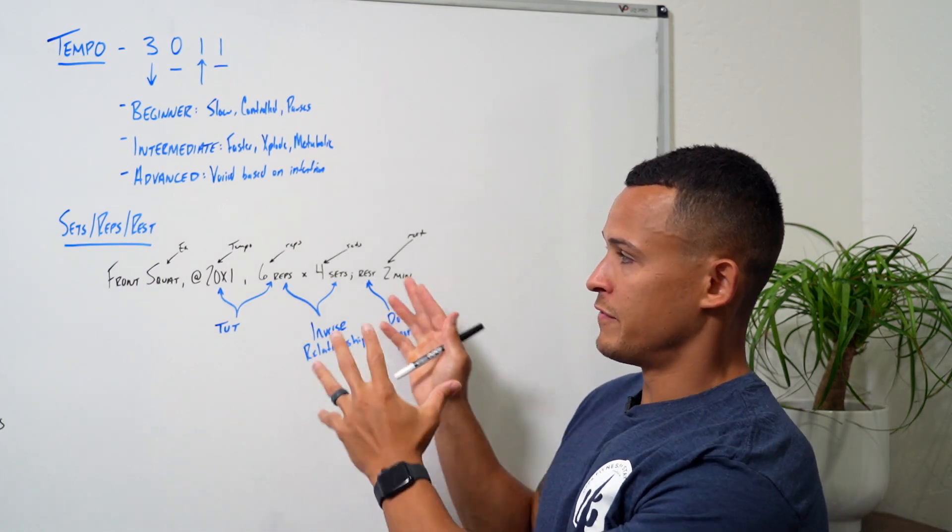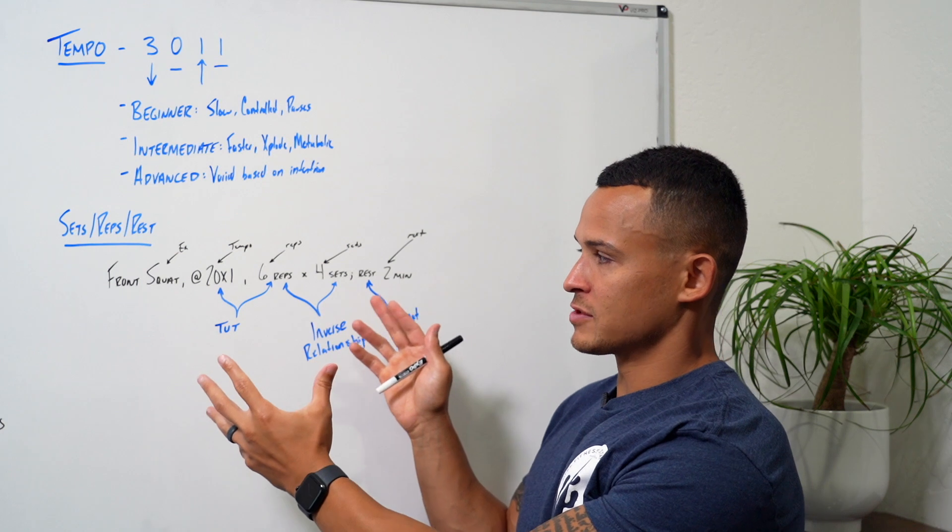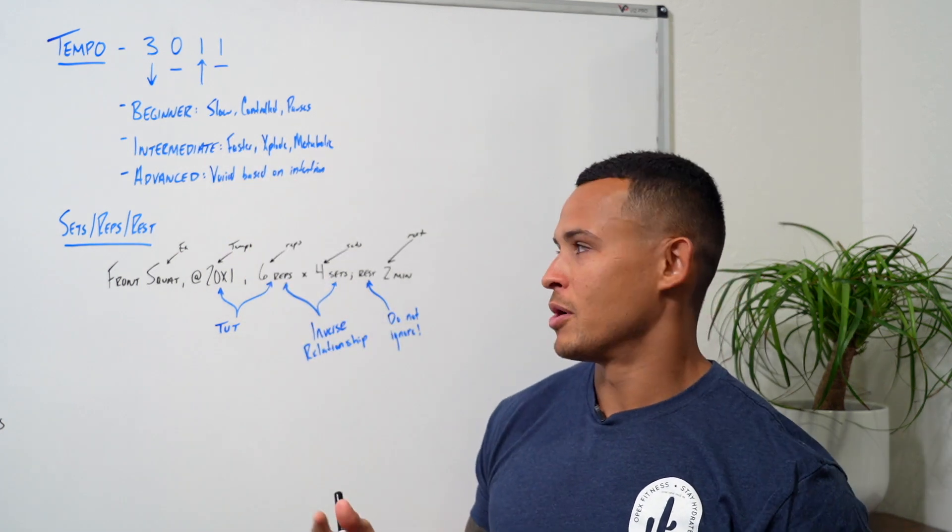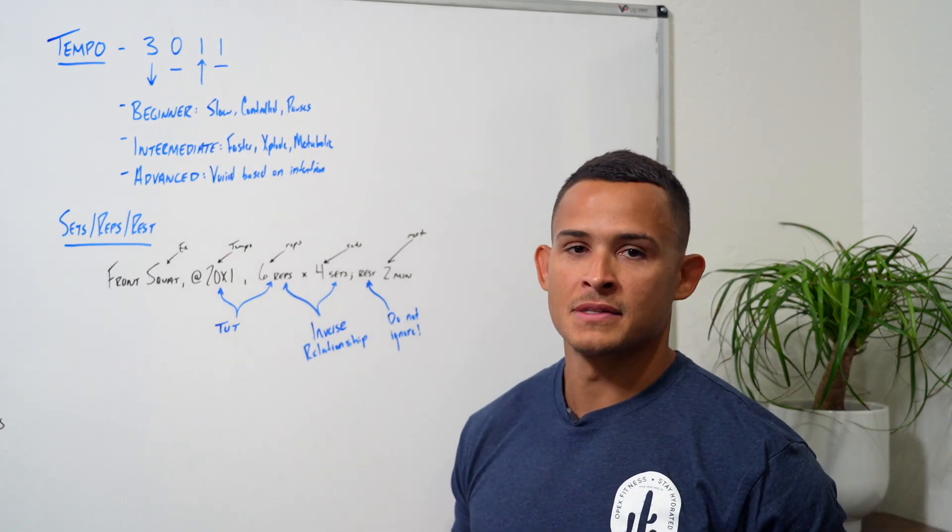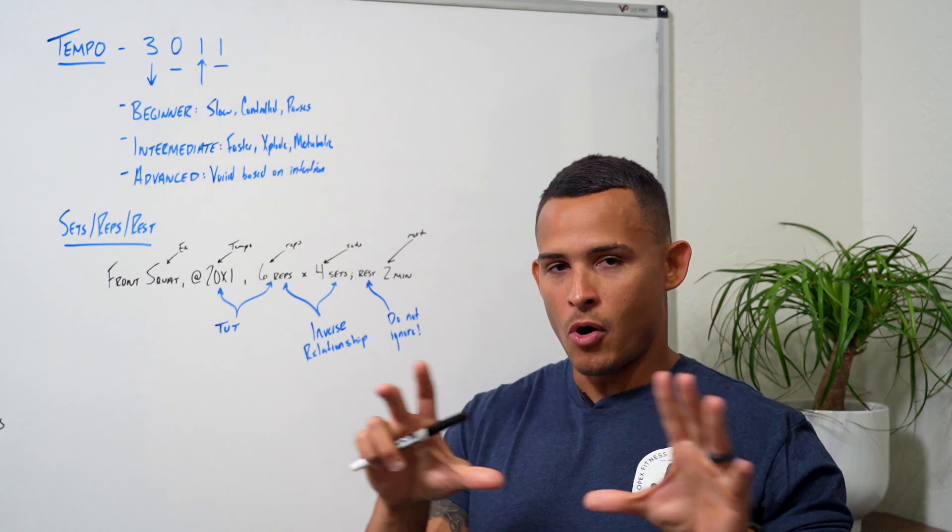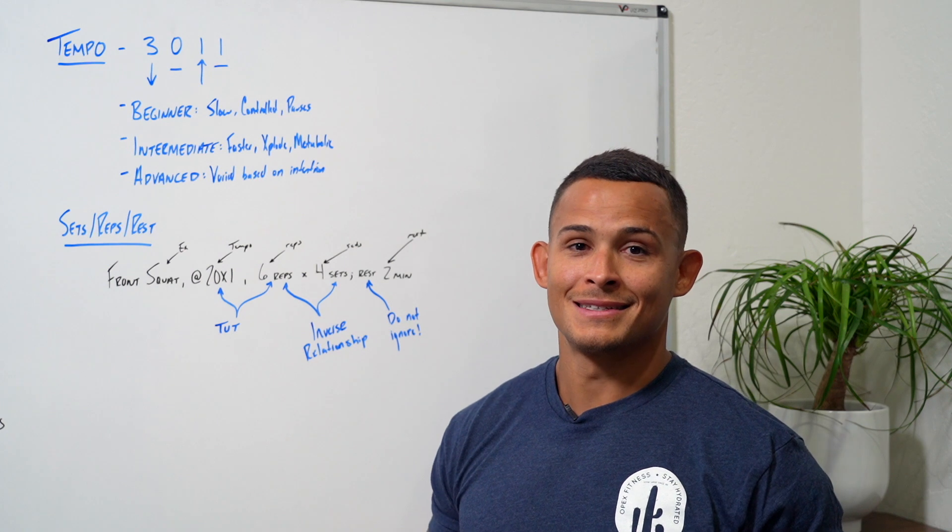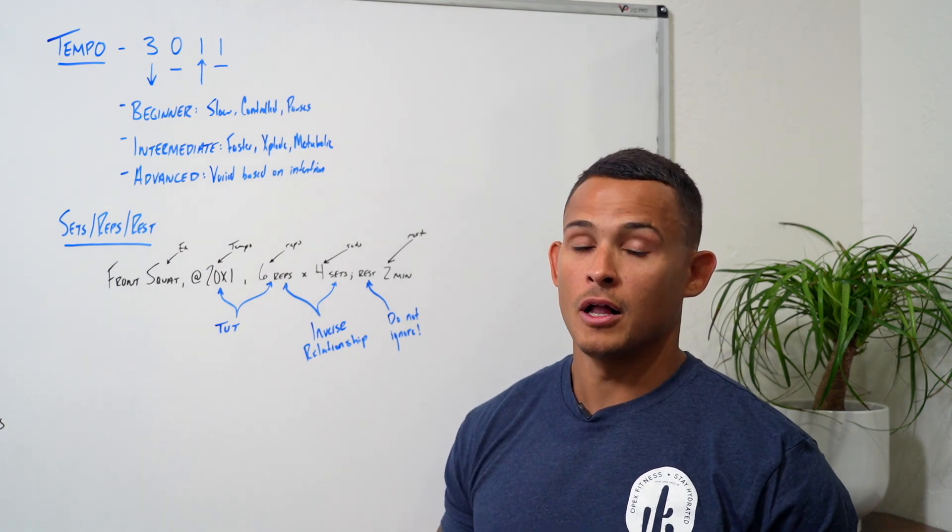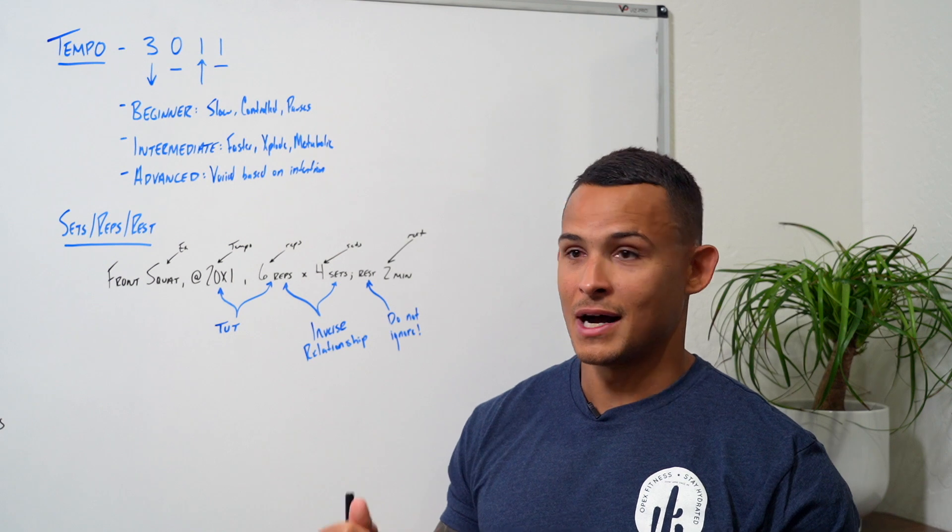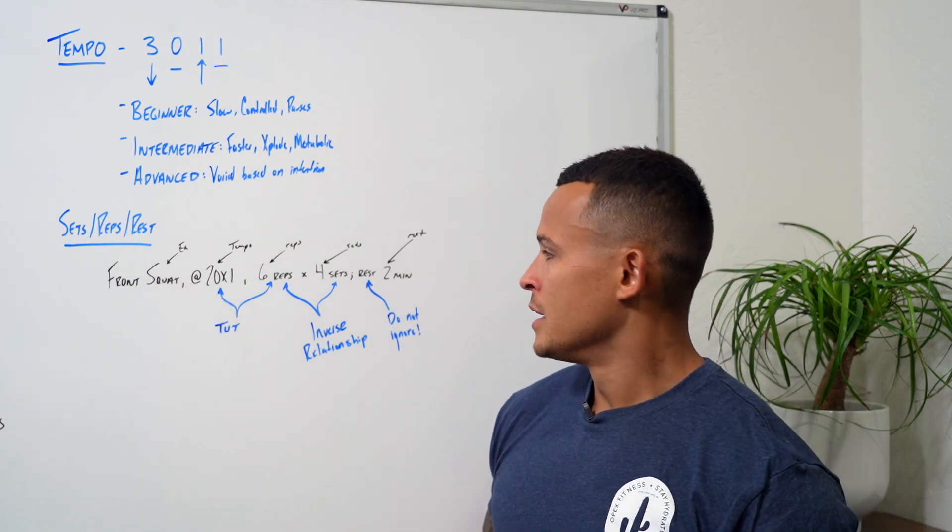Now when we talk about the variations inside of this and how these things relate, we look at those four things. We look at the tempo, the sets, the reps, and the rest. It's very important that we keep all four of those variables in mind because that strongly dictates what dose response our clients get along with the intensity that's used on the bar.